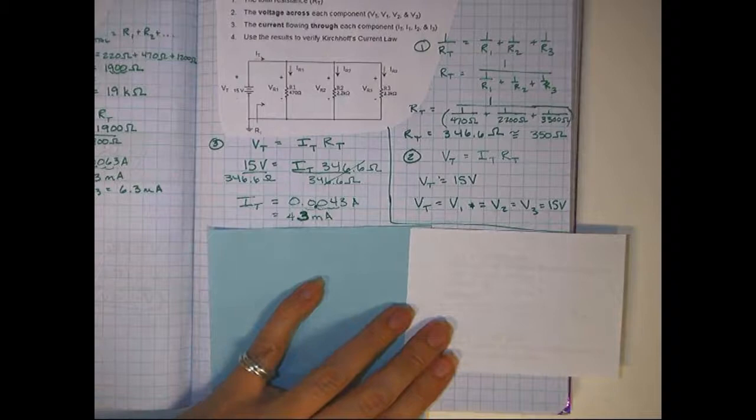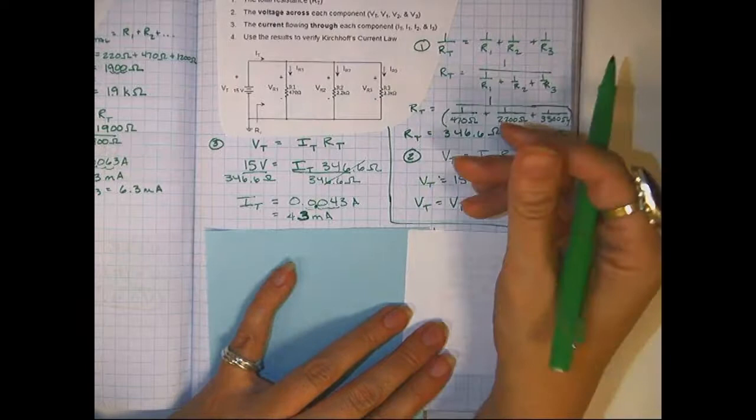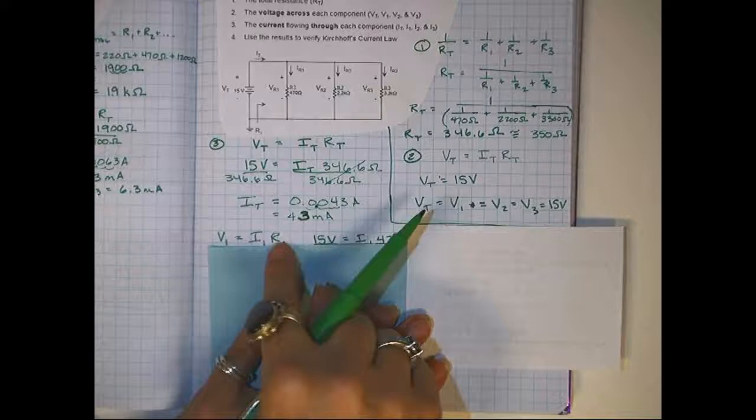Now we're going to find the current at each one of these branches, and we're going to use Ohm's law at each one. So the first one, Ohm's law, V1 equals I1, R1.